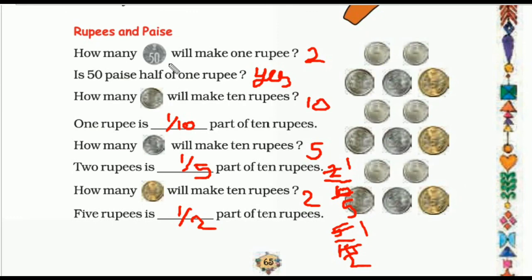So here you can write the answers. How many fifty paise will make one rupee? Two coins of fifty paise will make one rupee. Is fifty paise half of one rupee? Yes, fifty paise is half of one rupee. How many one-rupee coins will make ten rupees? Ten one-rupee coins will make ten rupees. One rupee is one tenth part of ten rupees. How many two-rupee coins will make ten rupees? Five two-rupee coins will make ten rupees — two rupees is one fifth part of ten rupees. How many five-rupee coins will make ten rupees? Two coins of five rupees will make ten rupees, and five rupees is half part of ten rupees. Do write the solution of this question from the PDF. Thank you.